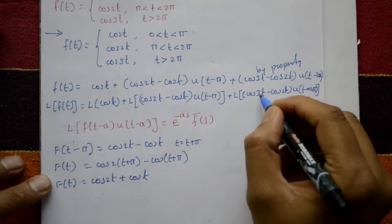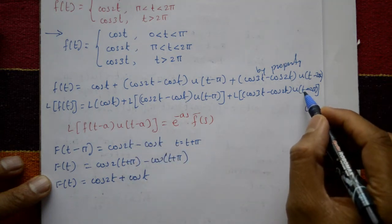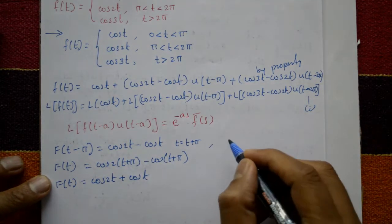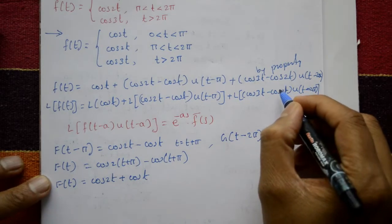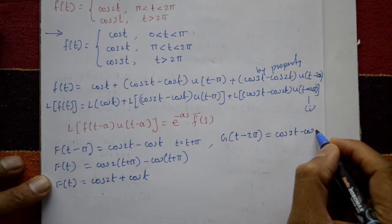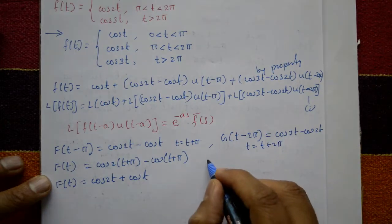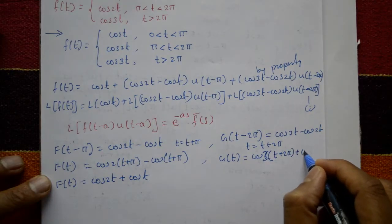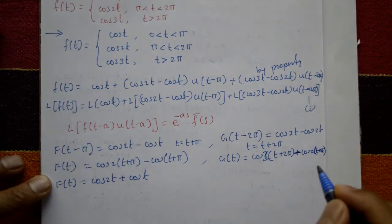For the third term, u(t − 2π) corresponds to a = 2π, and g(t − 2π) = cos 3t − cos 2t. To find g(t), replace t with t + 2π. We get g(t) = cos(3(t + 2π)) − cos(2(t + 2π)), which simplifies to cos 3t − cos 2t since both have period 2π.